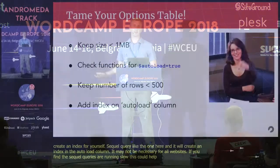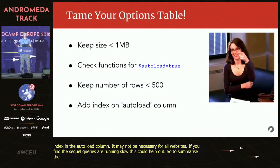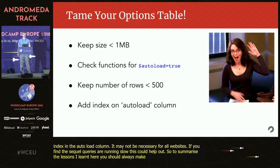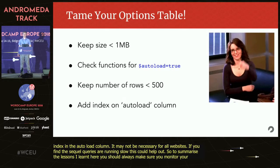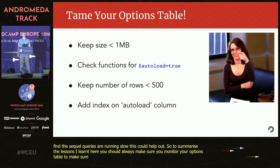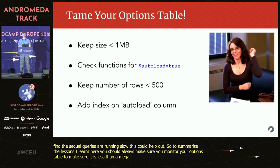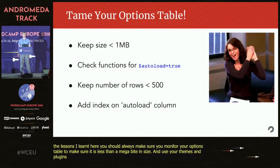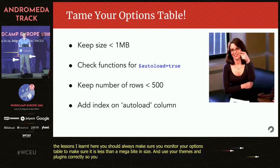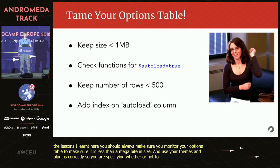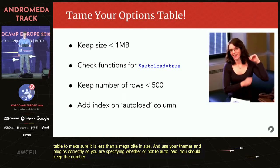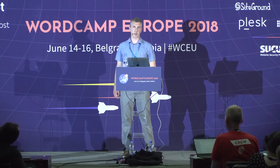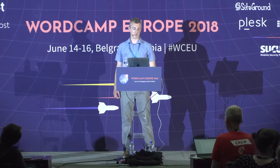To summarize the lessons learned: you should always monitor your options table to make sure it's less than a megabyte in size. Always make sure you're using the functions in your themes and plugins correctly so that you're specifying whether or not to autoload. Keep the number of rows in the options table to less than 500 total. And if necessary, you can add an index on the autoload column to help speed up your site.